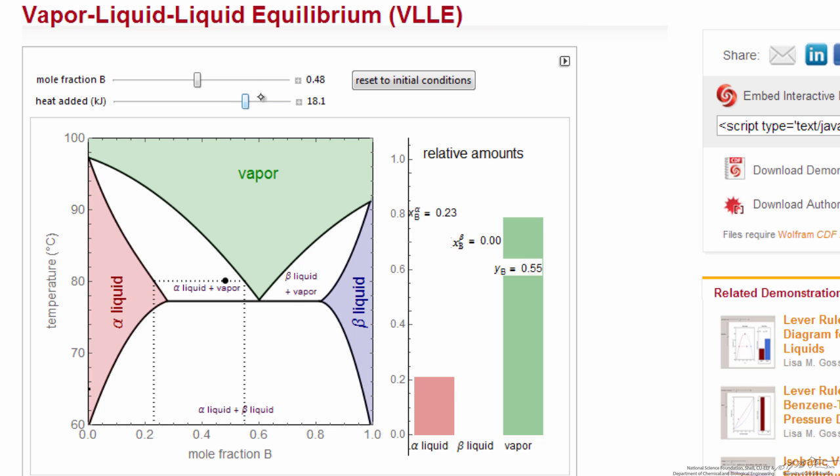The temperature where boiling occurs keeps changing as the composition changes, and then eventually we get to all vapor. As we add more heat, we're just raising the temperature of the vapor.